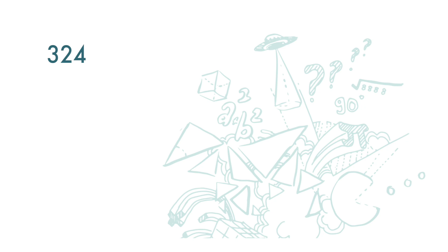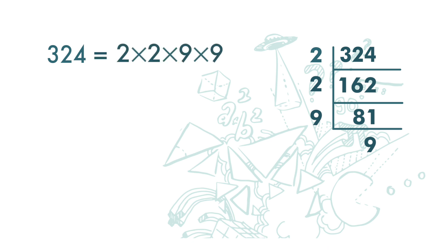What we do is divide 324 with a prime number. Let's start with number 2. 324 divided by 2 is 162. 162 divided by 2 is 81. 81 divided by 9 is 9. So 324 is equal to 2 times 2 times 9 times 9, which can be arranged to become 2 times 9 times 2 times 9, which is 18 times 18. So 324 is the perfect square of 18.